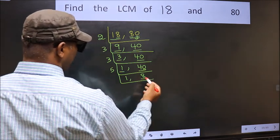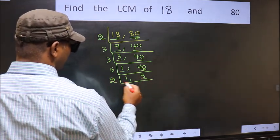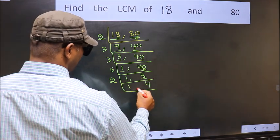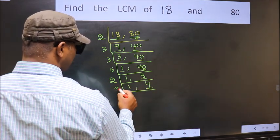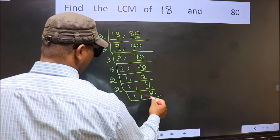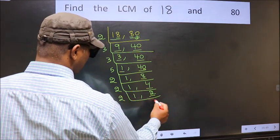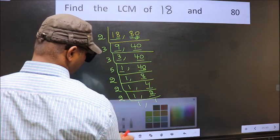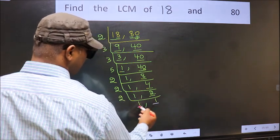Now here we have 8. 8 is 2 times 4 is 8. Now we have 4. 4 is 2 times 2. Now we have 2. 2 is a prime number so 2 times 1 is 2. So we got 1 in both the places.